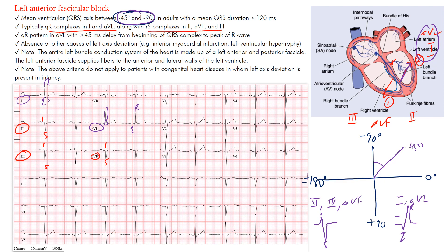The qR pattern in aVL may have a 45-millisecond delay from the beginning of the qR complex to the peak of the R wave — this is the R wave peak time. So from the beginning of the complex to the peak should be greater than 45 milliseconds. Remember, one small box is 40 milliseconds, so it's just above that. Looking at this example, it certainly meets that criterion.